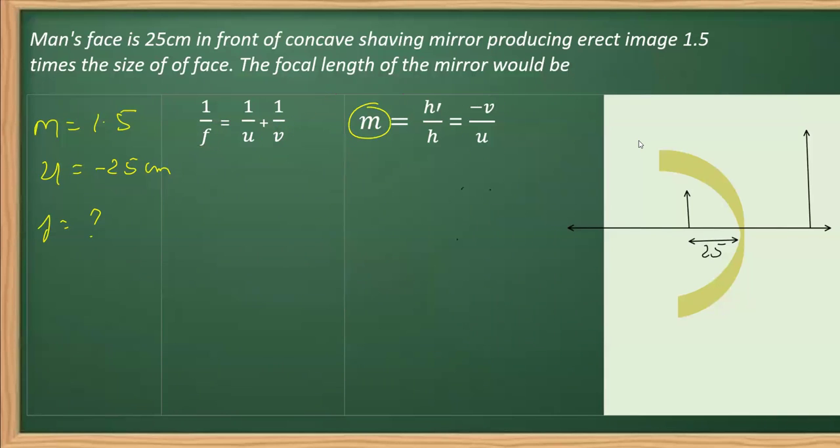We are going to use the second relation. I will be writing M equals minus V over U. We have magnification as 1.5 positive. So 1.5 equals minus V over U. U is minus 25, so I will be replacing this U along with the sign. We see that minus and minus get cancelled, and with cross multiplication, we will get V as 25 multiplied by 1.5.